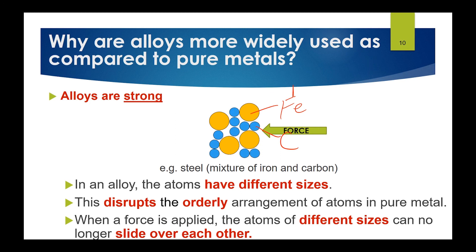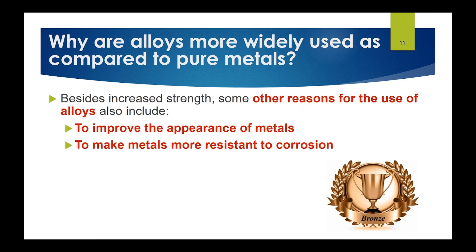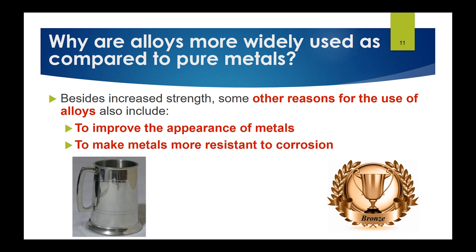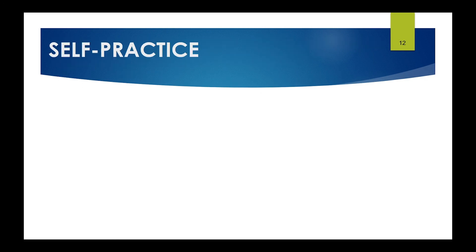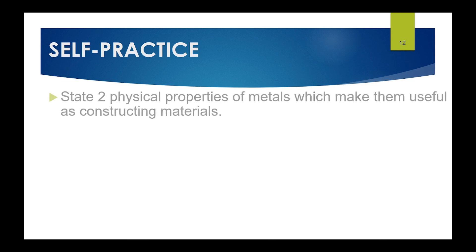Besides increased strength, there are other reasons to use alloys. Alloys can improve the appearance of metals — for example, brass and bronze look far more attractive than pure copper or pure iron, which appear as a dull gray. Alloys can also make metals more resistant to corrosion, as seen in many coins used around the world today.